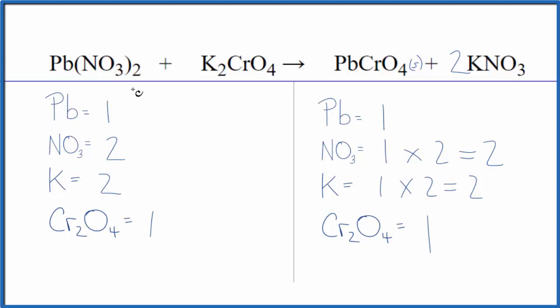With the equation for Pb(NO3)2 plus K2CrO4, lead nitrate plus potassium chromate. Thanks for watching.